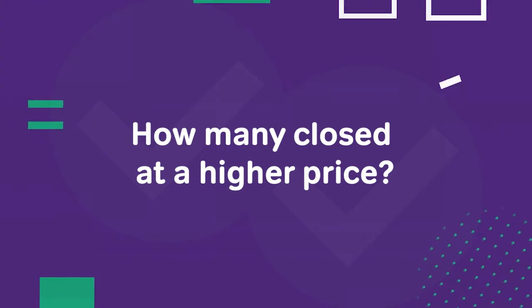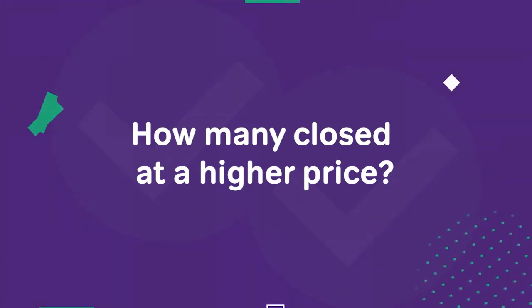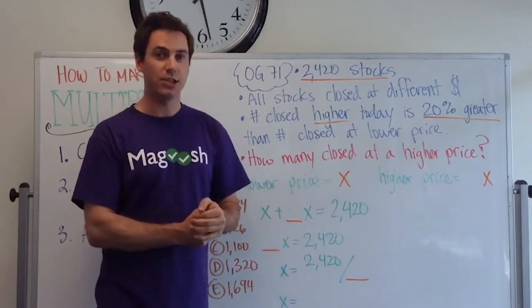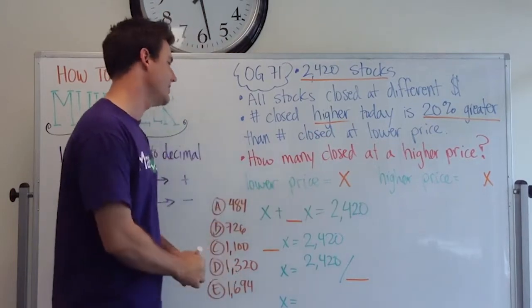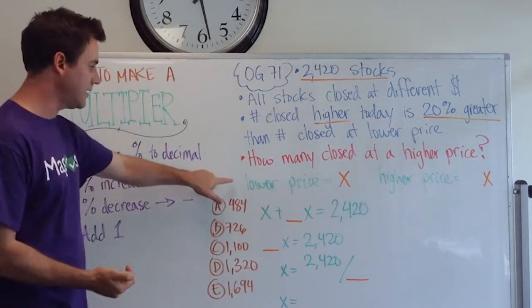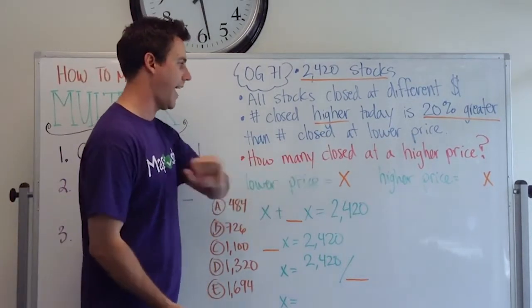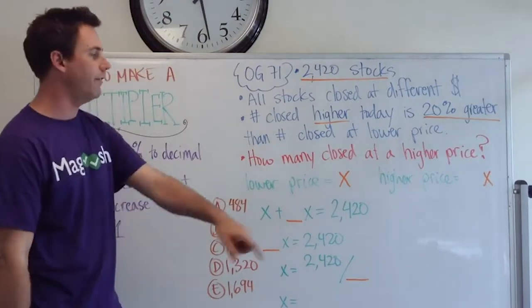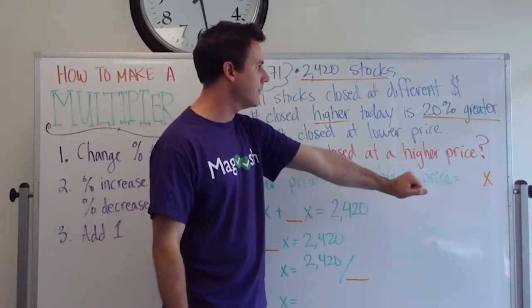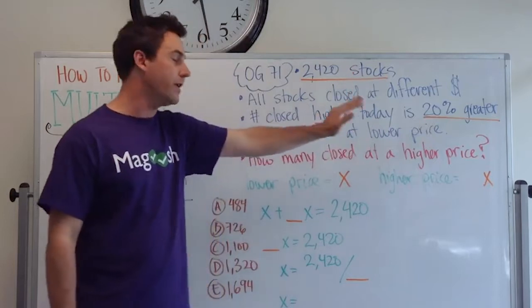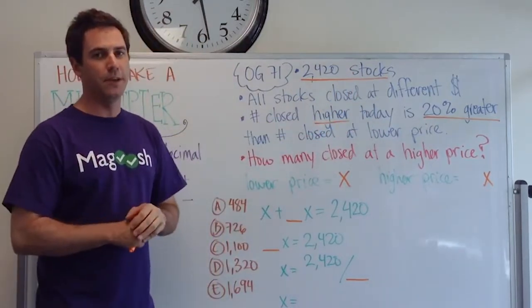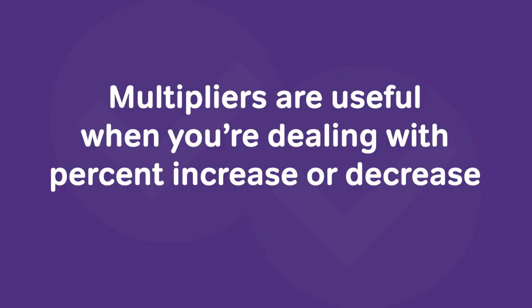So the question is, how many stocks closed at a higher price? So we're going to need to use a multiplier in this question. It'll make it a lot easier to deal with. The first thing I did was I set the lower price, the stocks that closed at a lower price to X. And then we're going to use a multiplier for our higher price because we have a 20% greater in the problem. And so this is one big takeaway: multipliers are great and useful when you're dealing with percent increase or percent decrease.